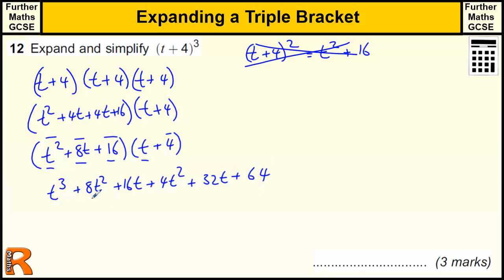And then we need to simplify it by adding up the same thing. So we've got t cubed, we've got 8t squared and 4t squared is 12t squared, 16t and 32t is 48t and then just 64 on the end.